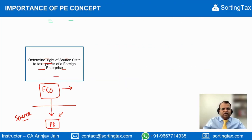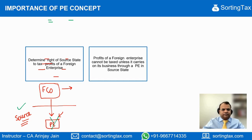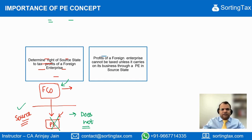Any profit that it earns outside the source state from other sources is not liable to tax there. So if a PE exists, then the source state has the right to tax the profits earned by the foreign company in the source state. However, if the PE is not there, then the source state does not have a right to collect any taxes on the income of the foreign company, even though it may be related to operations in the source state. In other words, the profits of a foreign enterprise cannot be taxed in the source state.